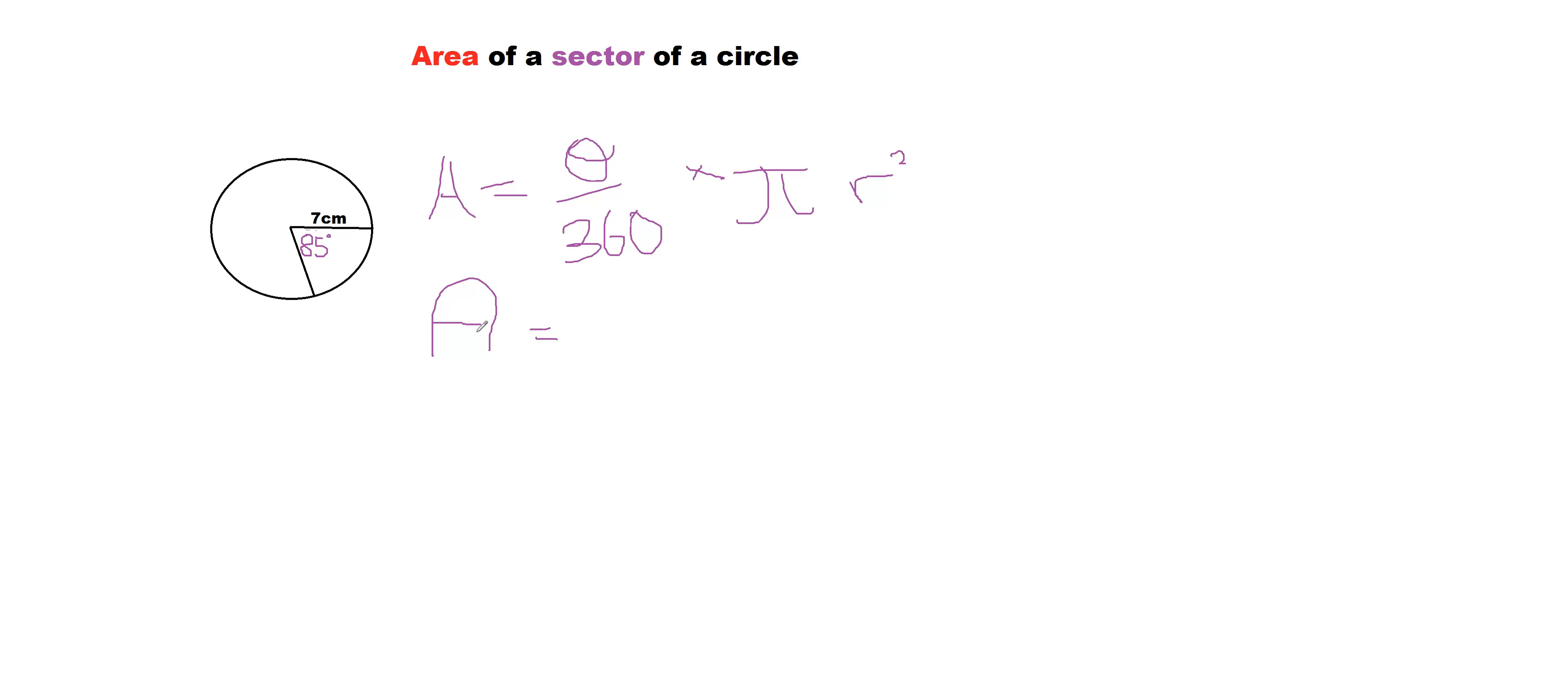So now we're just going to substitute those values: A equals 85 over 360 times that by pi times 7 to the power of 2.